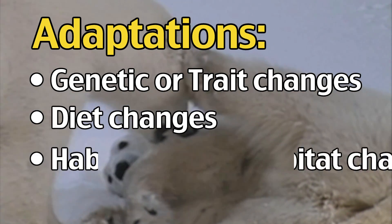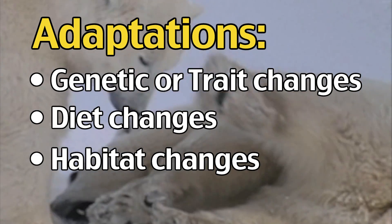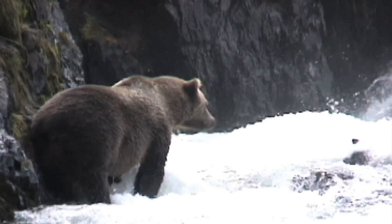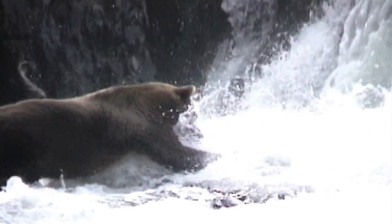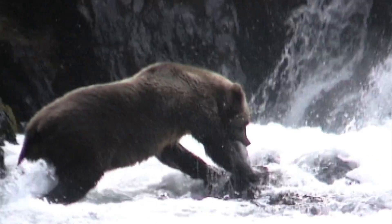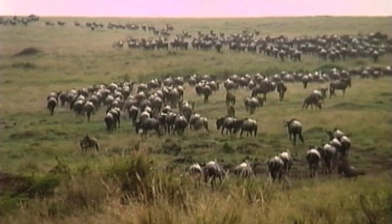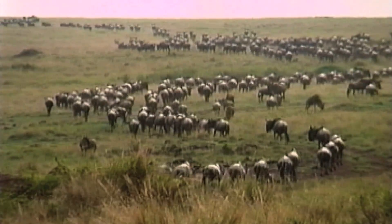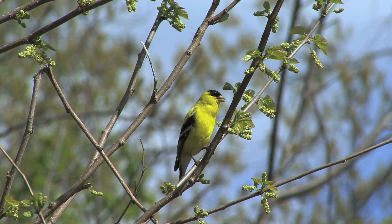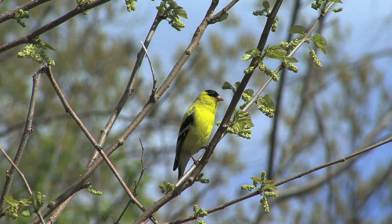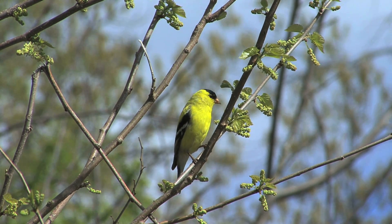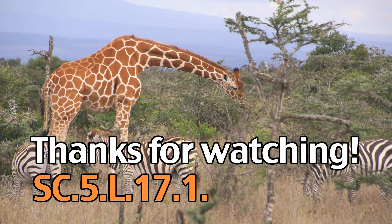Diet changes and habitat changes are also types of adaptations. If an animal's main source of food is no longer available, they must change food sources in order to survive. On that same note, if an animal's primary habitat gets destroyed, the animals will be forced to relocate, which sometimes involves other adaptations to fit their new climate and environment.